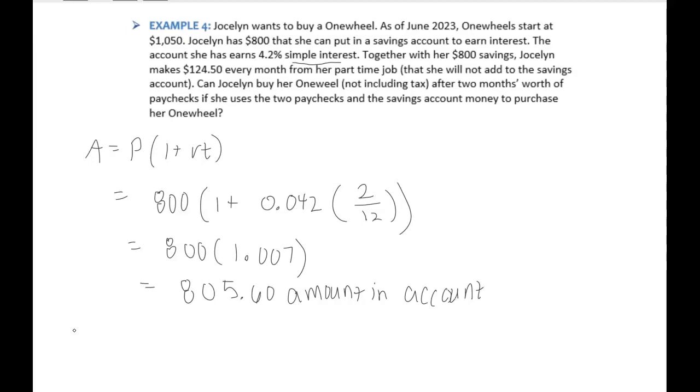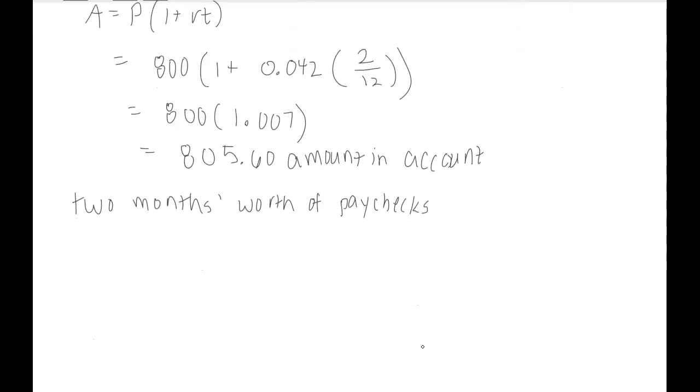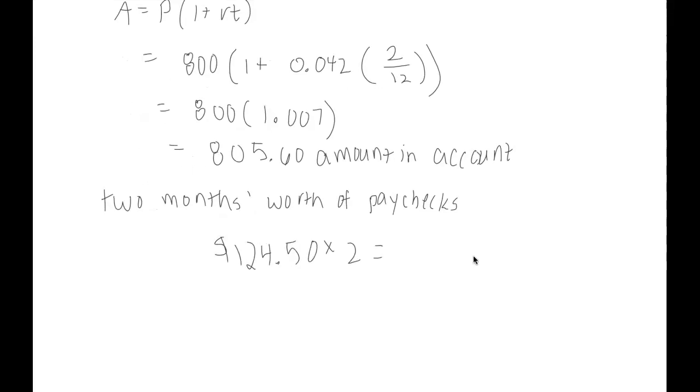So now we would want to know, what is two months worth of paychecks? So to determine that, we know that Jocelyn makes $124.50 every month. So I will simply take that $124.50 and multiply by two months. That means after two months worth of paychecks, she has made $249.